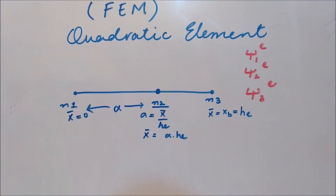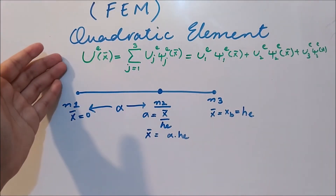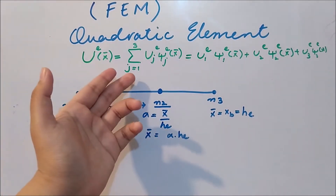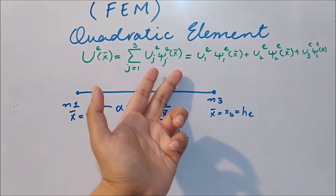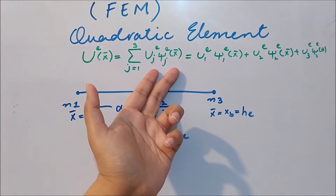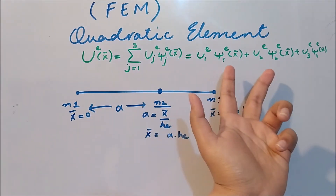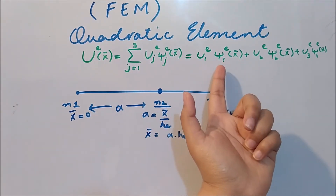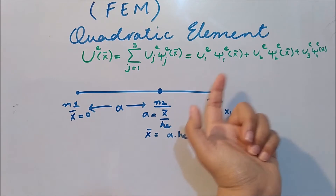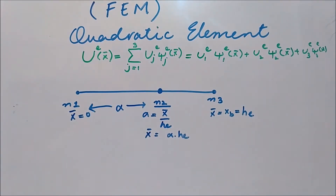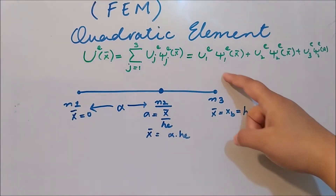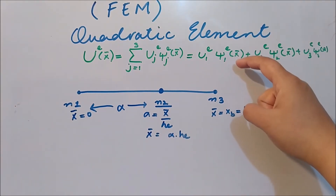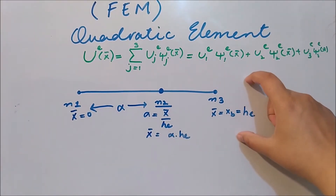This is because the shape function is our interpolation function — that is the nature of the interpolation function. That is the approximation function we have, because we have three nodes. So the approximation is the summation from j=1 to 3 of uⱼ·ψⱼ. If we expand this notation, we get ψ1·u1 + ψ2·u2 + ψ3·u3. Now we have to derive ψ1, ψ2, and ψ3 for this quadratic element.